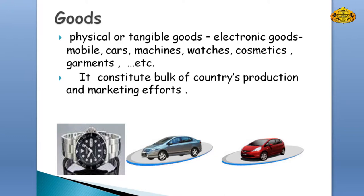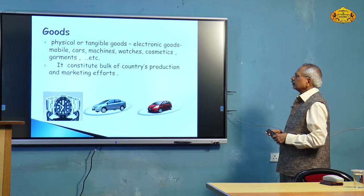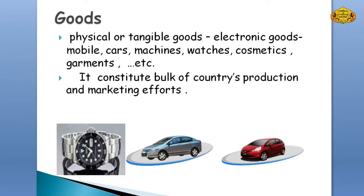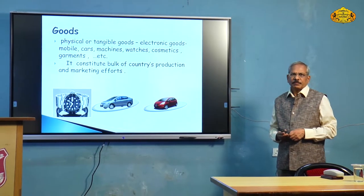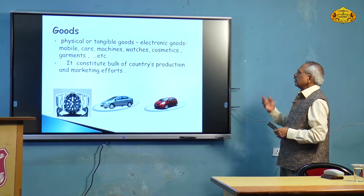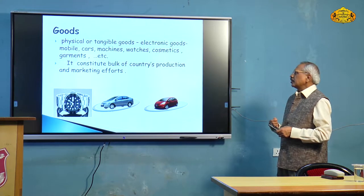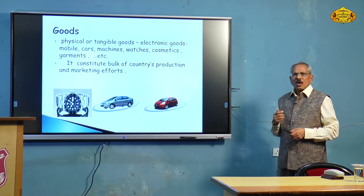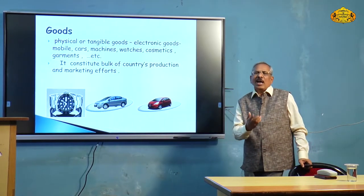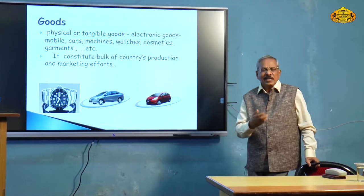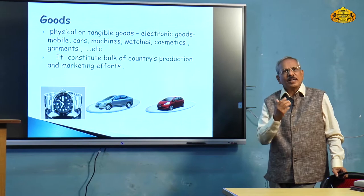When we talk about goods and services, there are various things which are marketed. When we talk about goods, it refers to physical or tangible goods. Physical goods include electronic goods like mobiles, cars, machines, watches, cosmetics, garments and so on. These goods are things you can see, you can touch, you can physically verify and you can consume them.